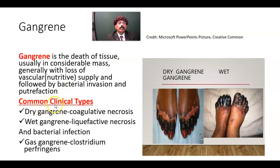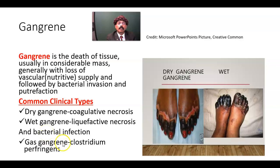What are the common clinical types of gangrene? We have dry gangrene, which is a coagulative necrosis; wet gangrene, which is a liquefactive necrosis associated with bacterial infection; and gas gangrene, which is a special type involving formation of gas and damage to tissue caused by Clostridium perfringens, especially type C.